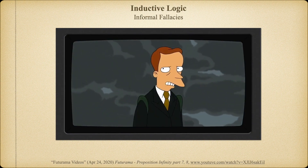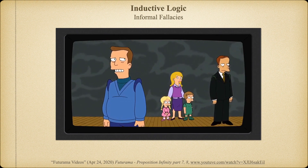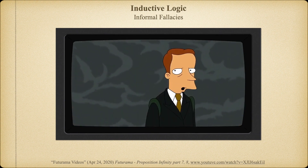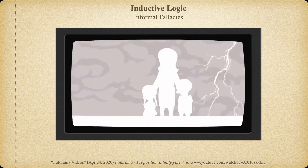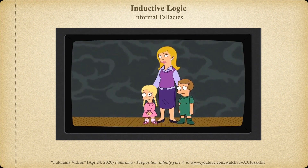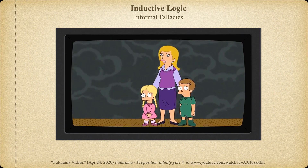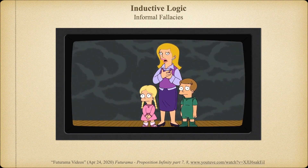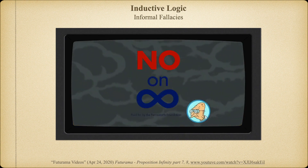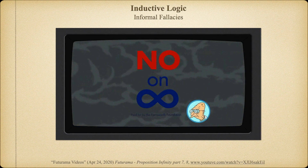In this Futurama clip, a character declares 'A storm is gathering — a storm of robo-sexual marriage that will rain down on us like fire.' When asked to imagine the horrible things that will happen to our children, the speaker admits they couldn't actually think of any. This is slippery slope in action. There is nothing wrong with making predictions about the future, but the reliability of a prediction is always directly related to the amount of evidence we have for making it. Slippery slope occurs when we make predictions about negative future outcomes based on insufficient evidence.